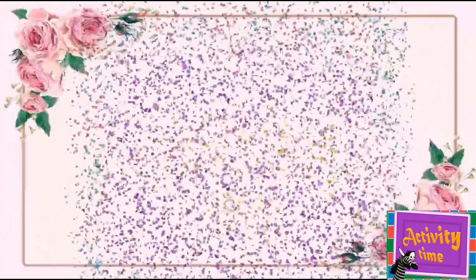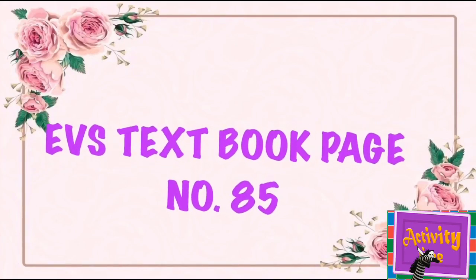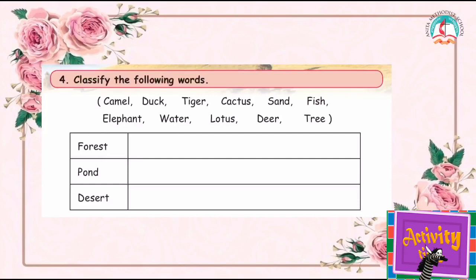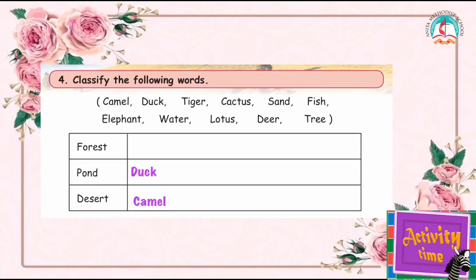Friends, shall we do an activity? Okay friends, take page number 85. In this activity we have to classify the following words to where they belong. Shall we do it? Where does the camel belong? Yes, the camel belongs to the desert, so write your answer camel in the desert column. Where can you see the duck? Yes, you can see the duck in a pond — write the word duck in the pond column. The next one is the tiger. Where can you see a tiger?